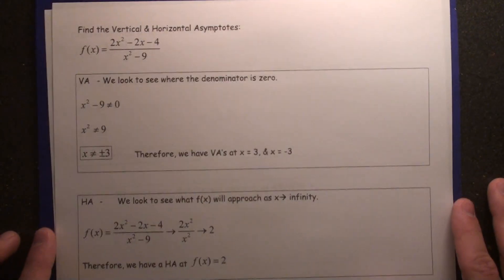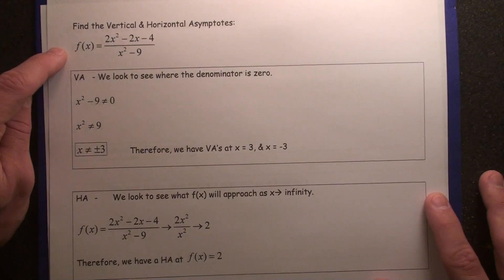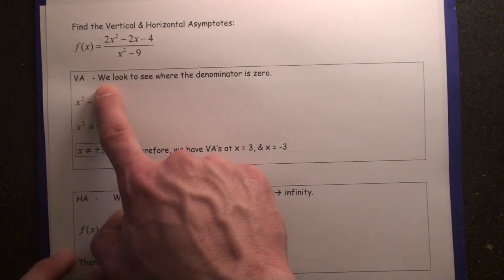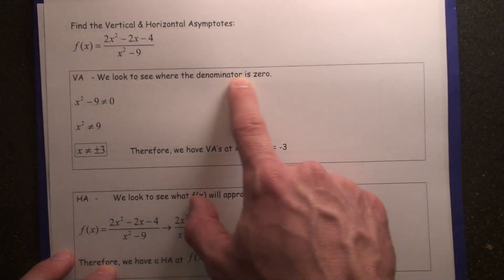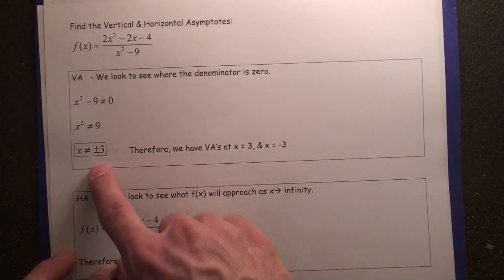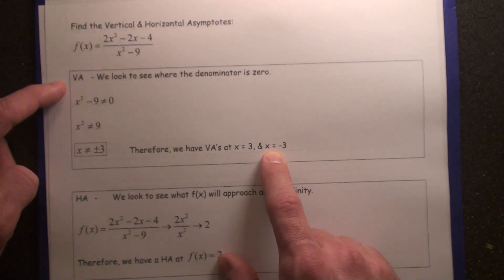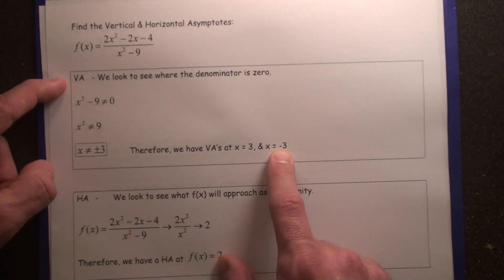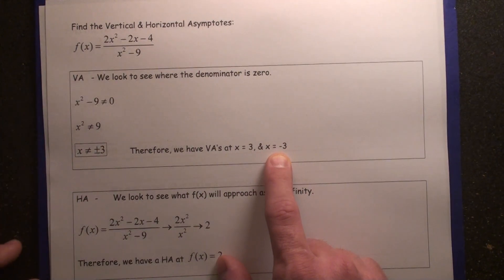Find the vertical and horizontal asymptotes for f of x. For the vertical asymptotes, we look to see where the denominator is 0. Where is x squared minus 9 equal to 0? At 3 and negative 3. Therefore, we have vertical asymptotes at x equals 3 and x equals negative 3, which are vertical lines.